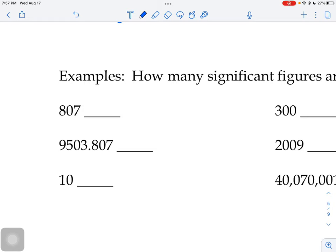So the eight counts and the seven counts. Now that zero in the middle is in an eight-seven sandwich, and so anytime you have those zeros sandwiched between two other significant figures, we're going to say that guy counts as well. So the number 807 has three significant figures, three measured numbers.